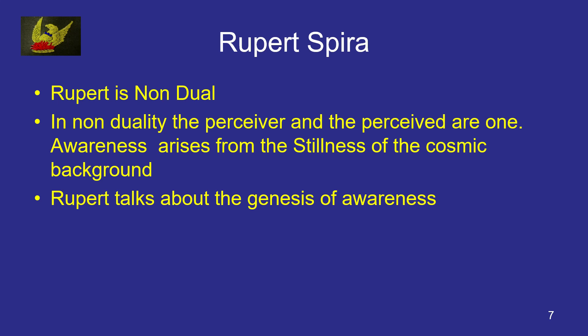In non-duality — watch this one very carefully — the perceiver and the perceived are one. Is that not our koan? The koan says the perceiver cannot perceive. Well, how can he perceive if he is the perceived? In non-duality, the perceiver and the perceived are one, and awareness — which is the consciousness that we're working with — arises from the stillness of the cosmic background.